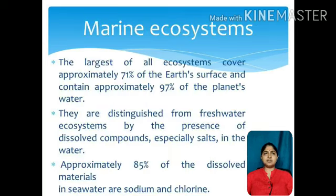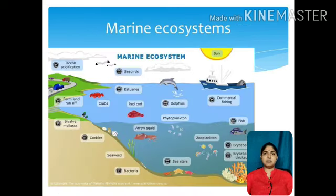Marine ecosystems, the largest of all ecosystems, cover approximately 71% of Earth's surface and contain approximately 97% of the planet's water. They are distinguished from freshwater ecosystems by the presence of dissolved compounds, especially salt, in the water. Approximately 85% of the dissolved material in seawater is sodium and chlorine.